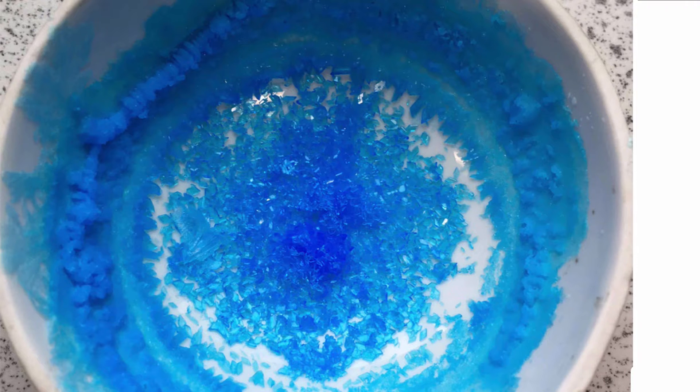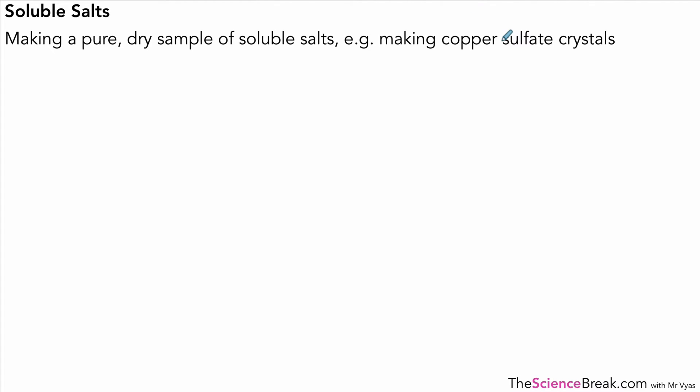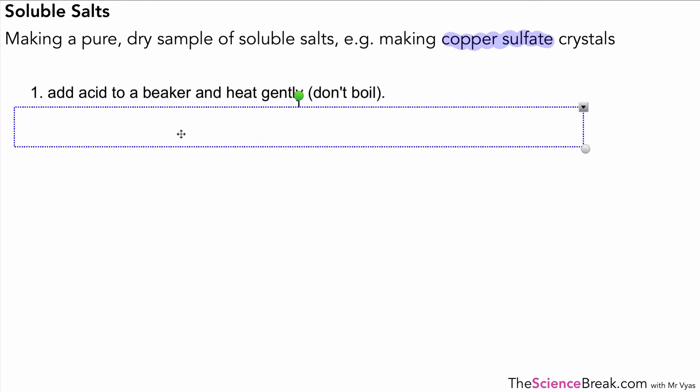This is how we would make our copper sulfate crystals. In other words, a dry sample of soluble salt. Let's go through the steps so you have a note of those if you need them. The first one is to add acid to a beaker and heat gently. Remember, don't boil it.